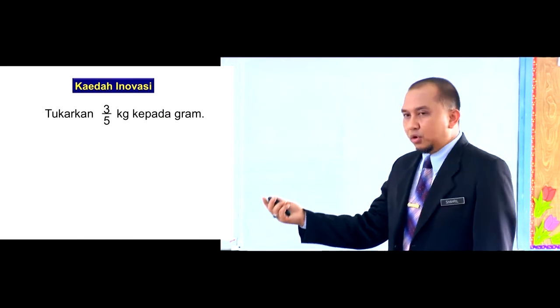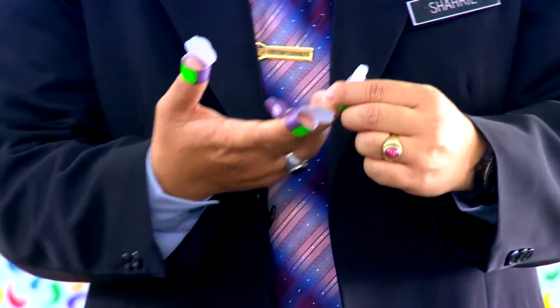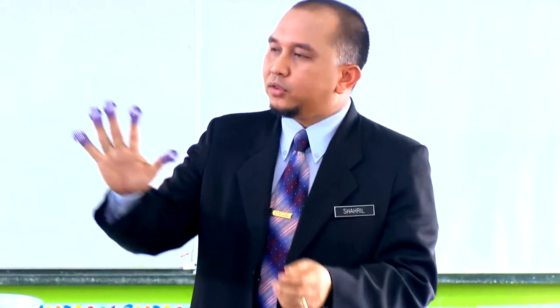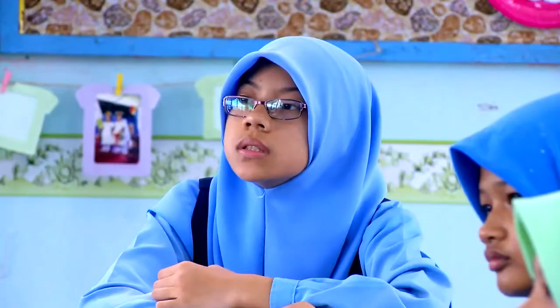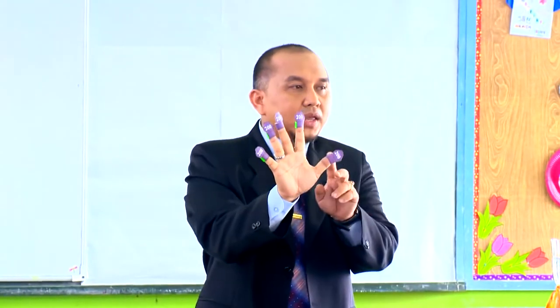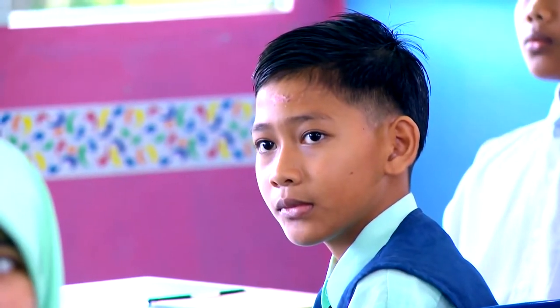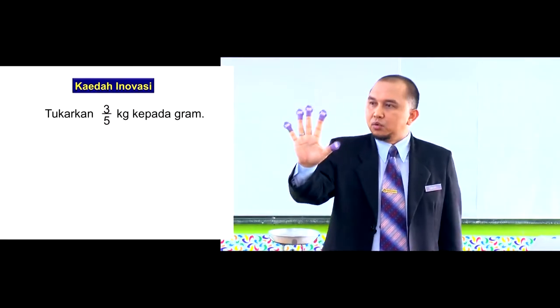Hari ini cikgu nak tunjukkan satu cara yang lebih mudah. Kamu akan dapat jawapan tanpa membuat pengiraan di atas kertas menggunakan kaedah inovasi, iaitu Miracle Fingers. Sebagai contoh soalan, tukarkan 3.5 kg kepada gram. Cikgu akan gunakan sarung jari ini untuk mendapatkan jawapannya. Pada sarung jari ini, tertulis 200 pada setiap jari. Kenapa 200 pada setiap jari? Satu kilogram bersamaan seribu gram. Jadi jika lima bahagian, satu bahagian bersamaan 200 gram. Jadi satu jari bernilai 200 gram. Berdasarkan soalan, kita lihat kepada penyebut. Sekiranya penyebutnya adalah lima, jadi kita gunakan lima jari.